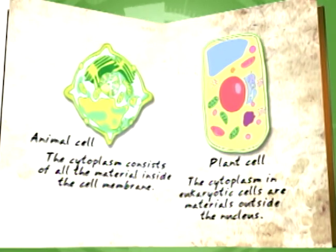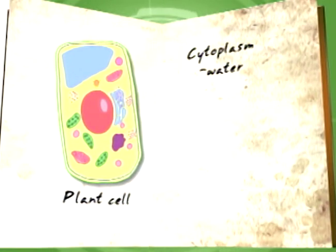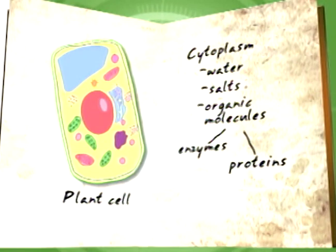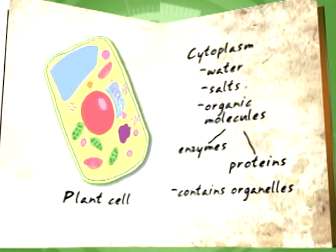The cytoplasm includes water, salts, and an assortment of organic molecules including enzymes as well as proteins. The cytoplasm also contains a variety of structures called organelles. Each organelle performs a distinct cellular function.